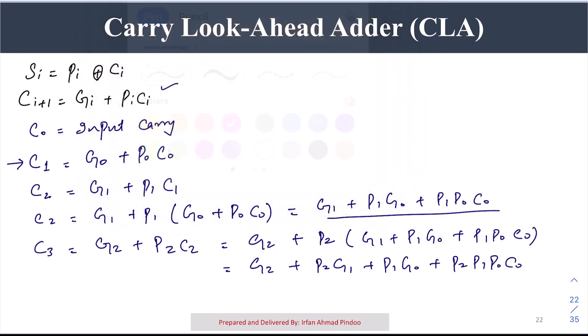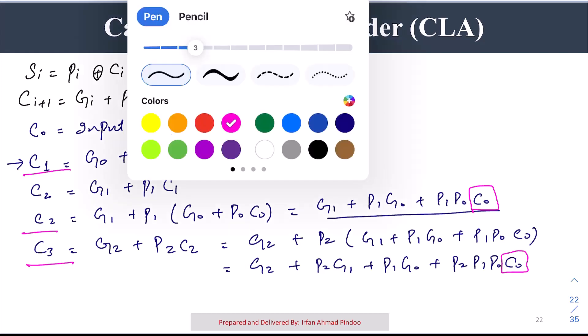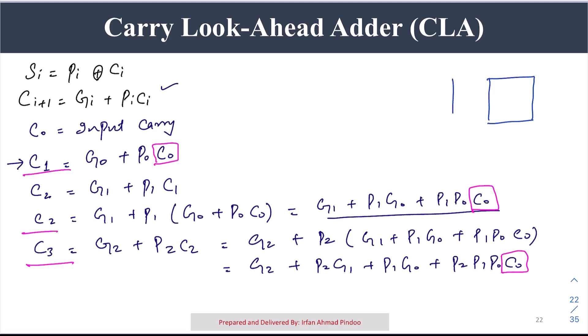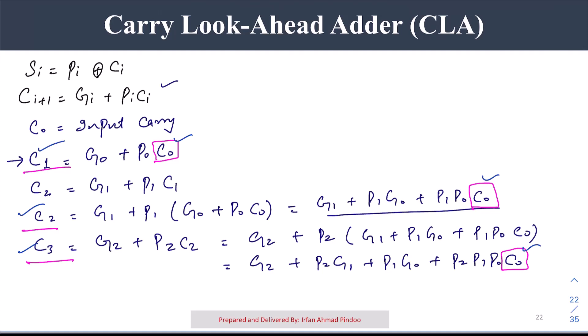What we have achieved is that C1, C2, and C3 are all expressed in terms of C0 only. We are not dependent on any intermediate carry values. Since C0, along with all the input bits A and B, is available right at the beginning, all intermediate carries C1, C2, C3 can be calculated simultaneously. From these equations we generate the carry look-ahead generator logic circuit.